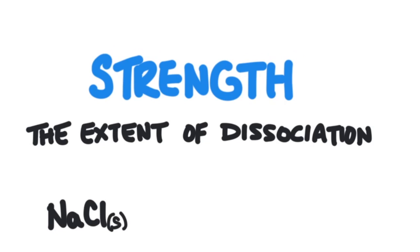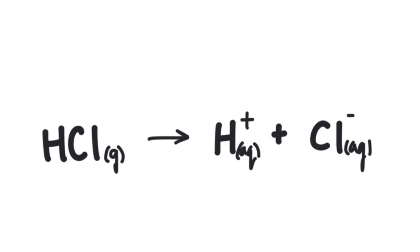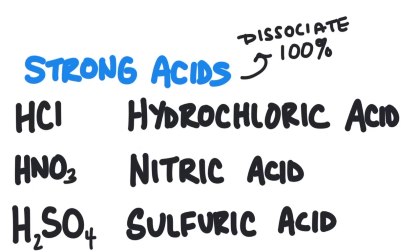Strength refers to the extent of dissociation of an acid or base compound. Dissociation is when the compound splits apart in water. For example, when solid sodium chloride is stirred into water, it dissolves — it dissociates into sodium ions and chloride ions. Hydrochloric acid does the same thing: HCl splits apart to give hydrogen ions and chloride ions. Some acids and bases dissociate completely while others only partially dissociate. The more an acid or base dissociates, the stronger it is.